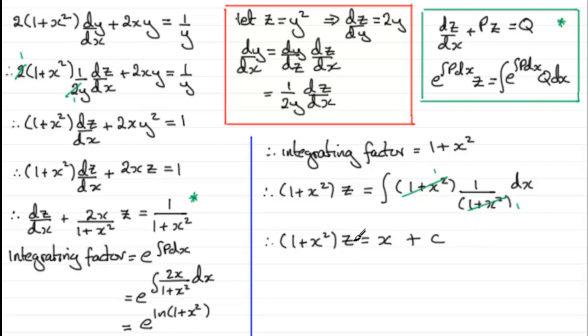Now we can substitute for z. We know that z equals y squared. So if we just say since z equals y squared, if we substitute this into here we end up with therefore 1 plus x squared multiplied by z which is now y squared equals x plus c. And there's your general solution. And you could rearrange it if you like to make y the subject. But essentially that's it.